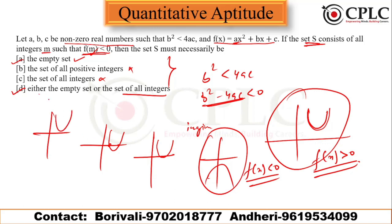If the parabola opens upward, you always get the empty set. If it opens downward — when the coefficient of x² is negative — then S becomes the set of all integers. So the answer is option D: S is either the empty set or the set of all integers. Options A, B, and C individually are all incorrect.